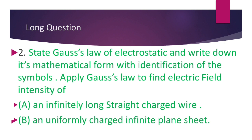Second question: State Gauss's law — Gauss's theorem of electrostatics — and write down its mathematical form with identification of symbols. Apply Gauss's law to find the electric field intensity of an infinitely long straight charged wire, or a uniformly charged infinite plane sheet. Draw the diagram and do the full mathematical derivation. Then for the uniformly charged infinite plane sheet, apply Gauss's theorem similarly.